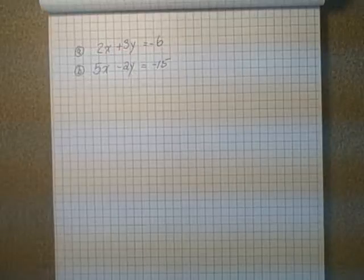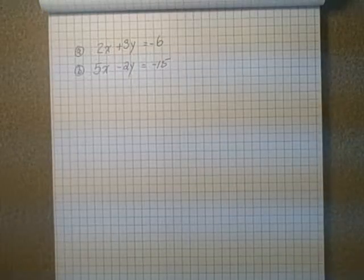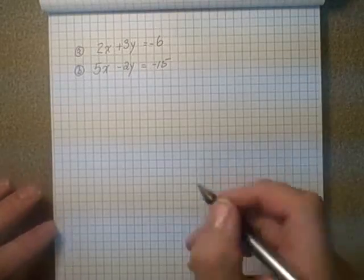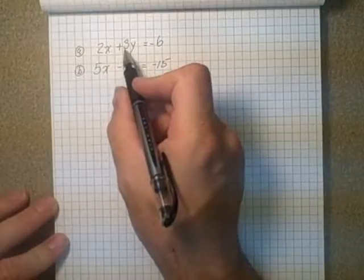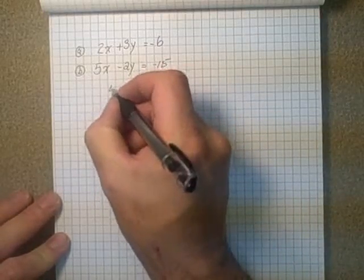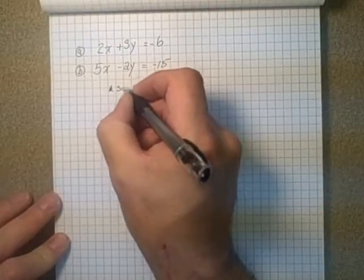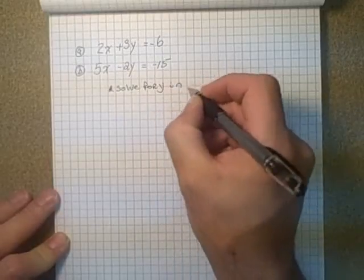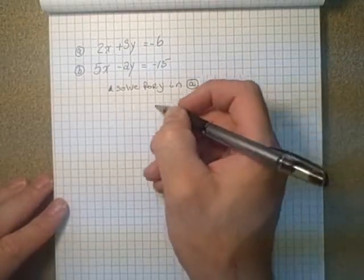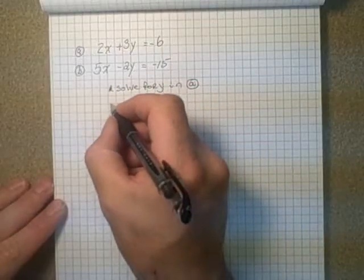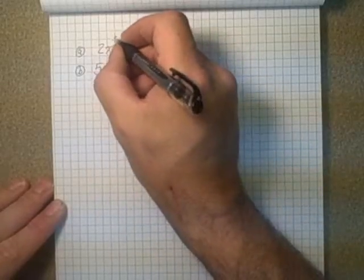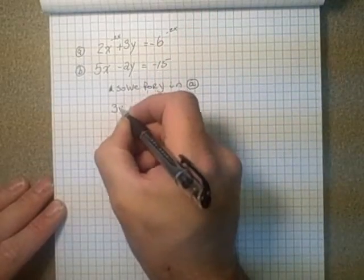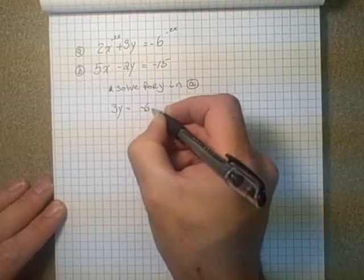So we have to choose one of the variables from one of the equations to solve for. So it doesn't really matter which one we choose. In this case, I'm going to choose solving for y in equation A. So let's solve for y in equation A. That's what I'm going to do. So I have to subtract 2x from both sides. So if I took this and went 2x off here and 2x off here, it would say that 3y is equal to negative 6 minus 2x.